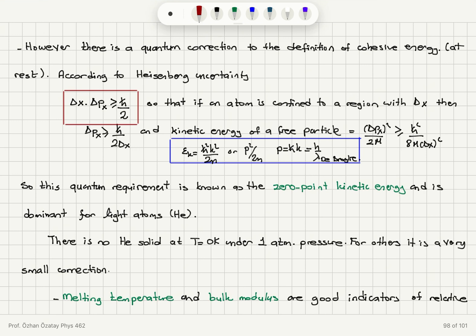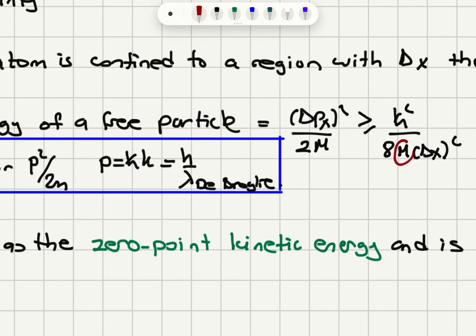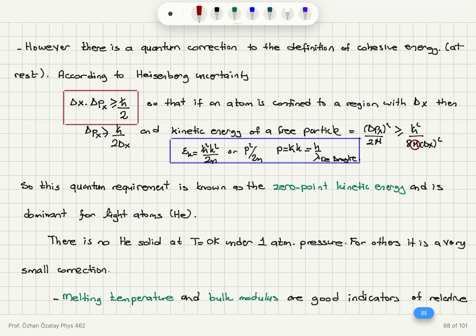This effect is especially strong for small mass atoms, since m is in the denominator, giving a greater dispersion in energy. This quantum requirement from Heisenberg's uncertainty is known as zero-point kinetic energy, and it is dominant for light atoms — for example, helium. This explains why there is no helium solid at zero Kelvin under one atmospheric pressure. For other atoms, this zero-point kinetic energy is a very small correction.